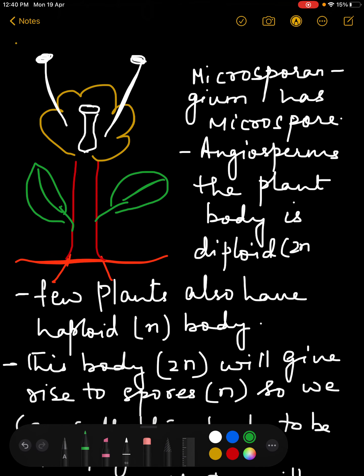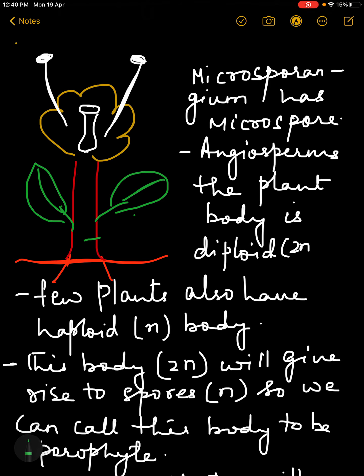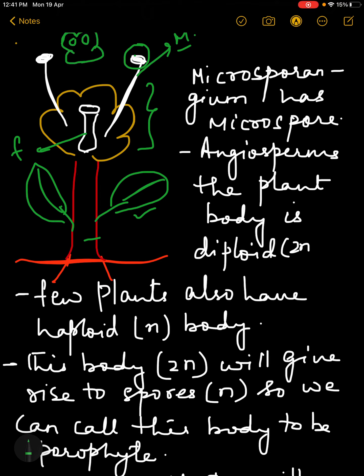This is a plant in front of you — the stem, the leaves, and this is the flower. Now the flower has a female part, and these are the male parts of the flower: the anther and the filament. Now we know that the anther is bilobed and there are four microsporangia. Each microsporangium will have microspores and those will give rise to pollen grains and gametes.